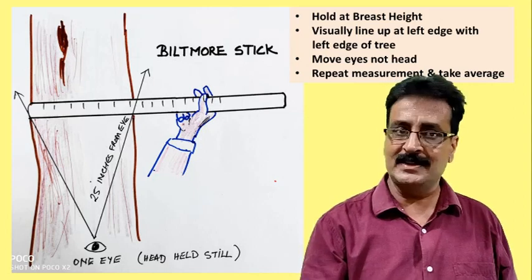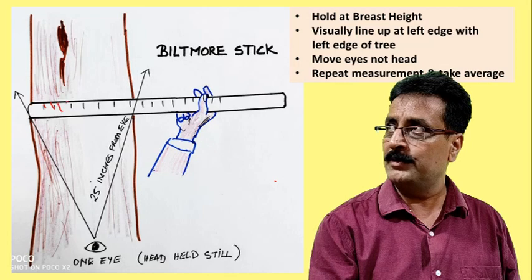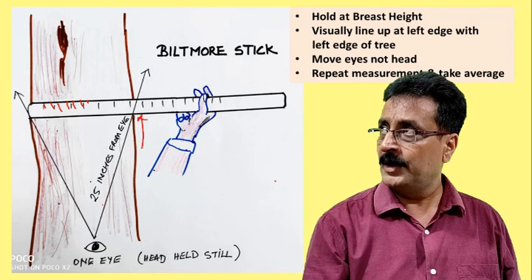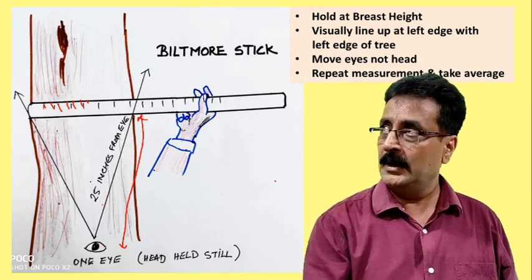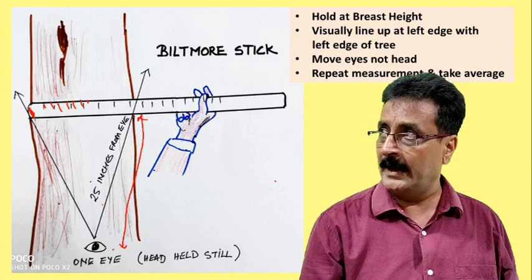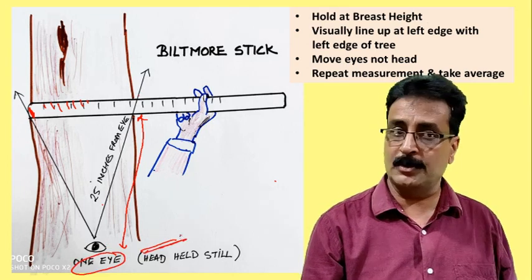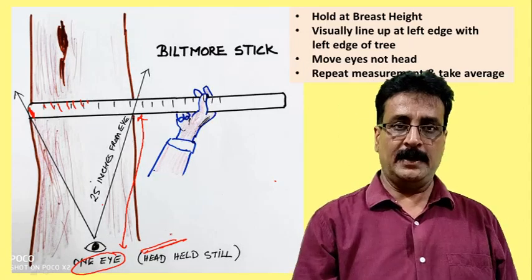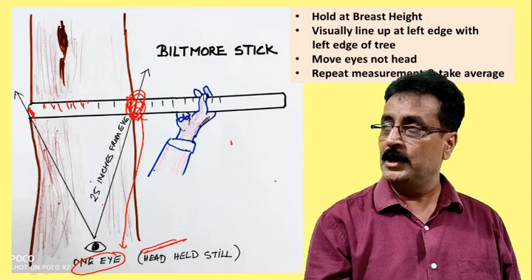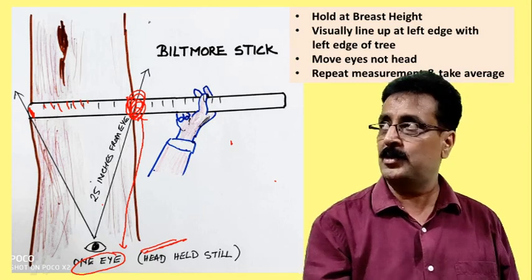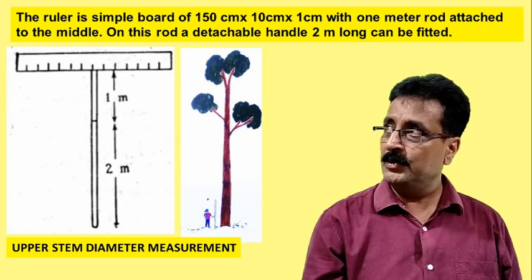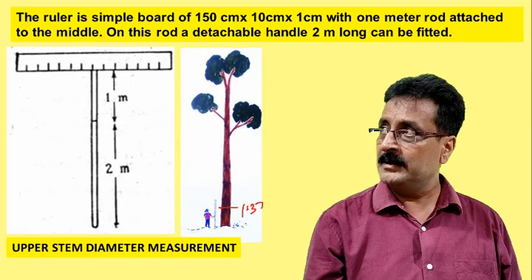Another instrument is the Biltmore stick. It is a simple graduated stick. You stand exactly 25 inches from the tree. With one eye, align the left edge of the stick with the left side of the tree and, without moving your head, move only your eye to read the graduation at the right side of the tree. Take two or three readings and average them. This gives you the diameter.